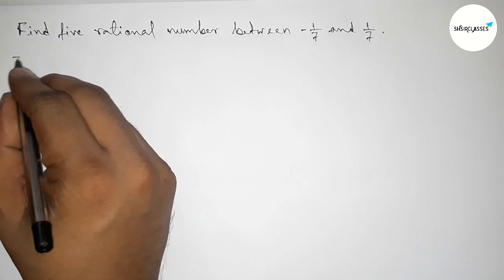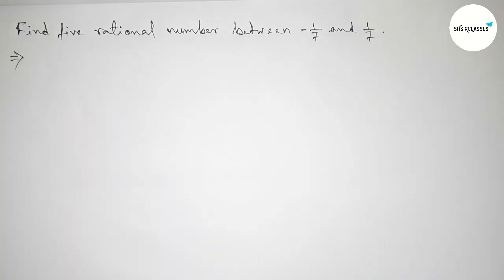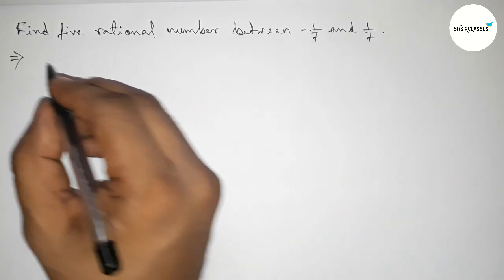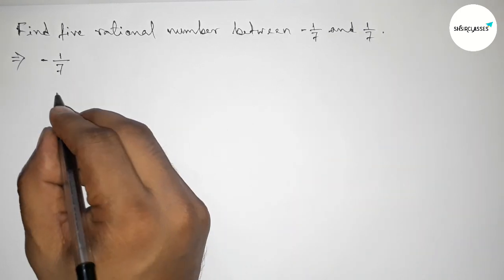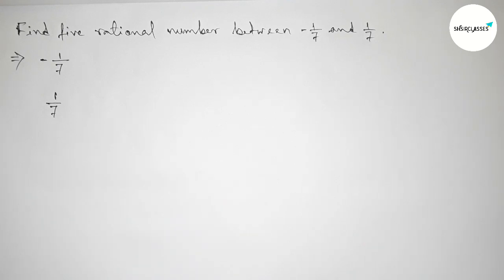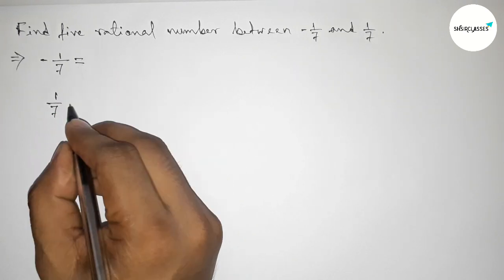First of all, let us solve this problem. So here the given first rational number is -1/7 and the second one is 1/7. So here both the denominators are equal and 7.